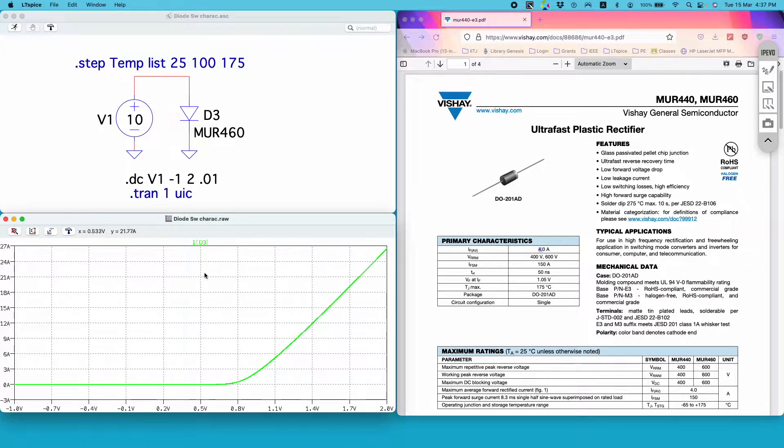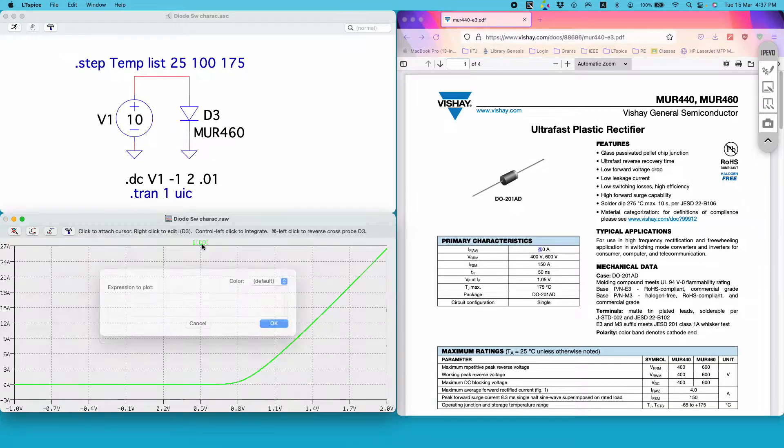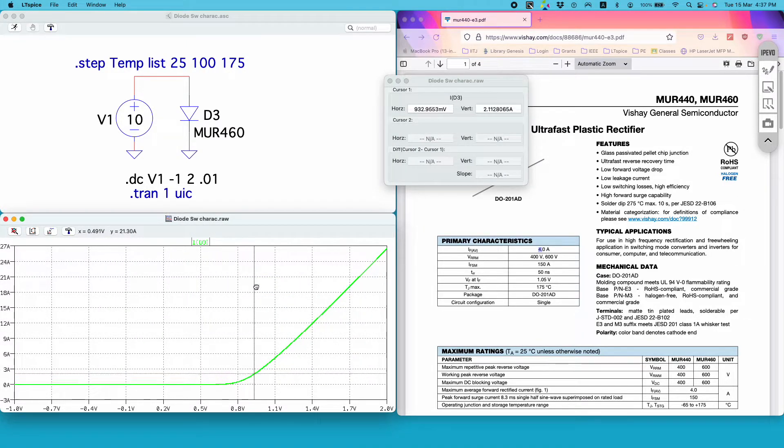Now let's see what is the forward voltage drop at 4 amps of current flowing through the diode. Let me take a cursor and align it with 4 amps. Here I am getting 1.038 volts, which is very close to the datasheet value.